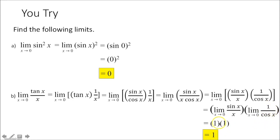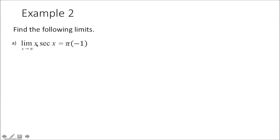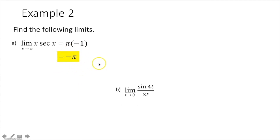Example 2 says find the limit as x approaches π of x times secant x. Plug in π for each of the x's. Plugging π into x gives π, and secant of π is negative 1. So negative 1 times π gives you negative π, and that would be your limit.